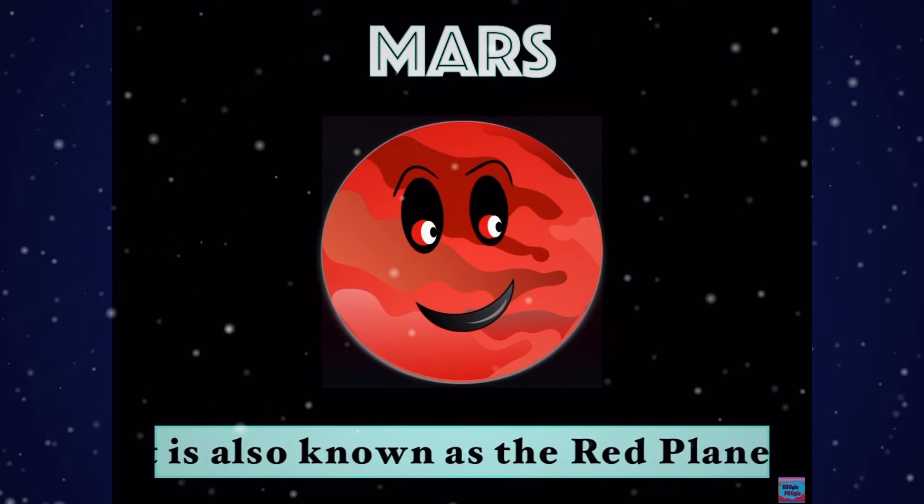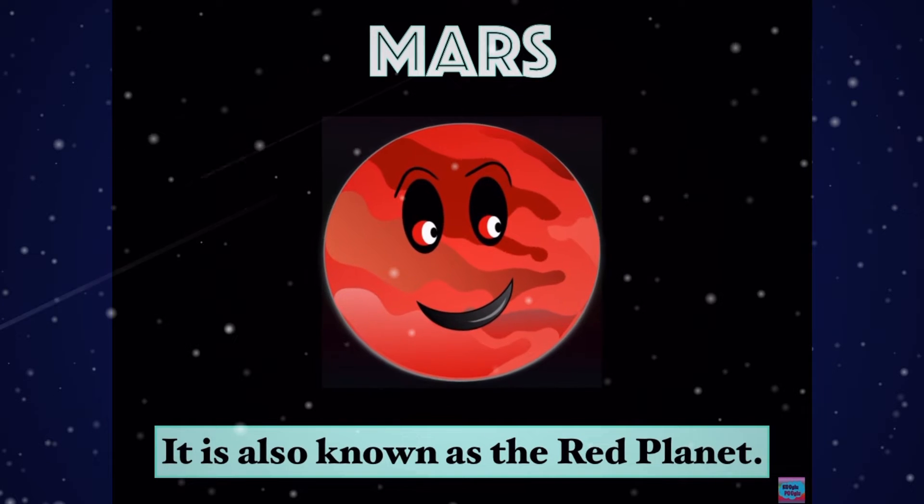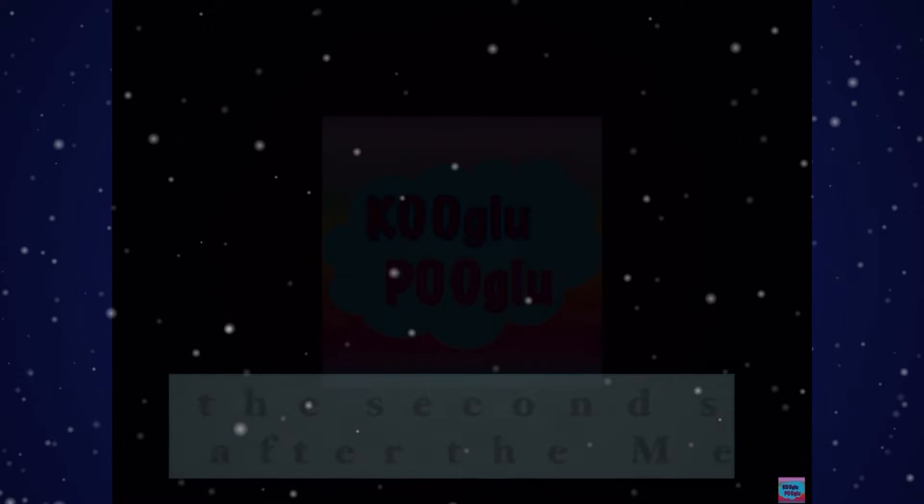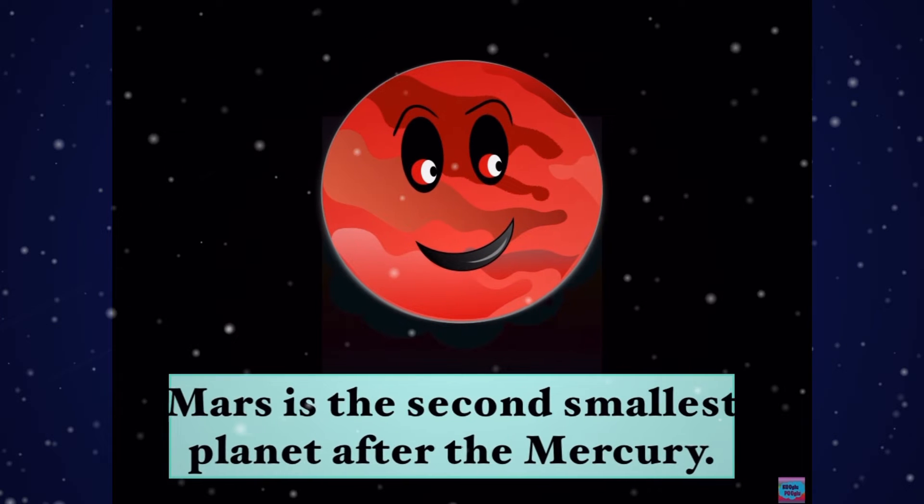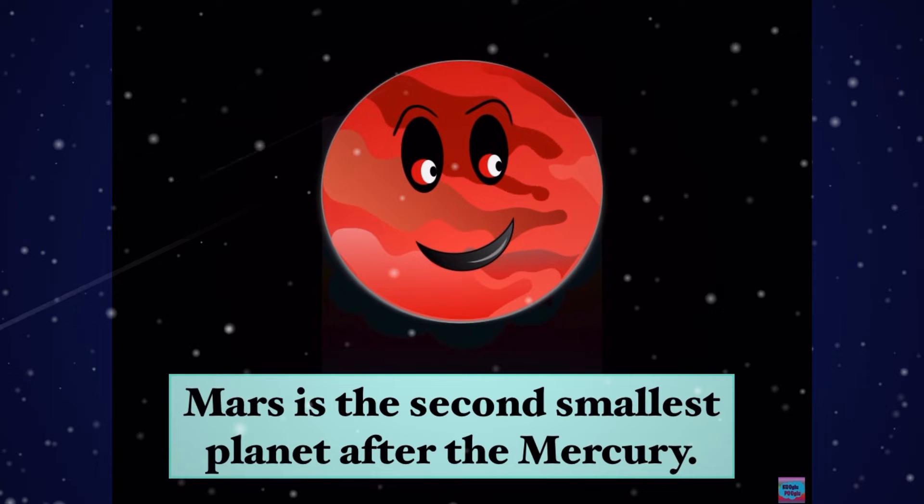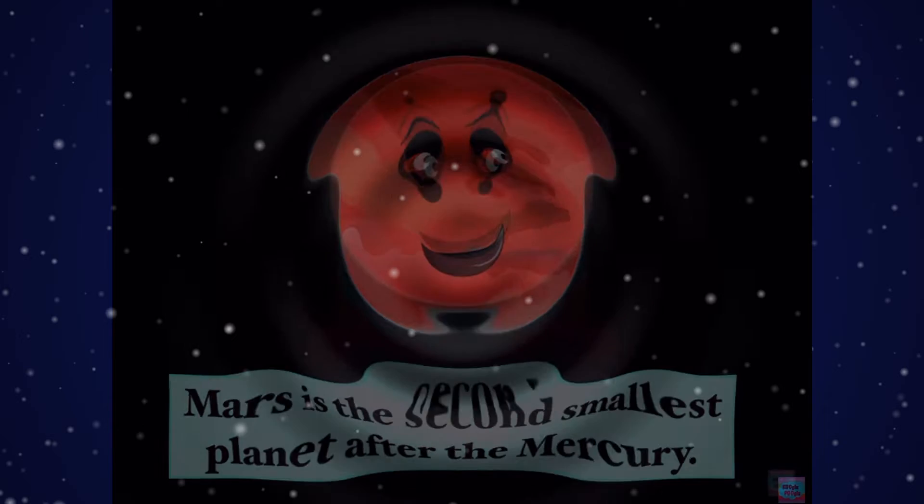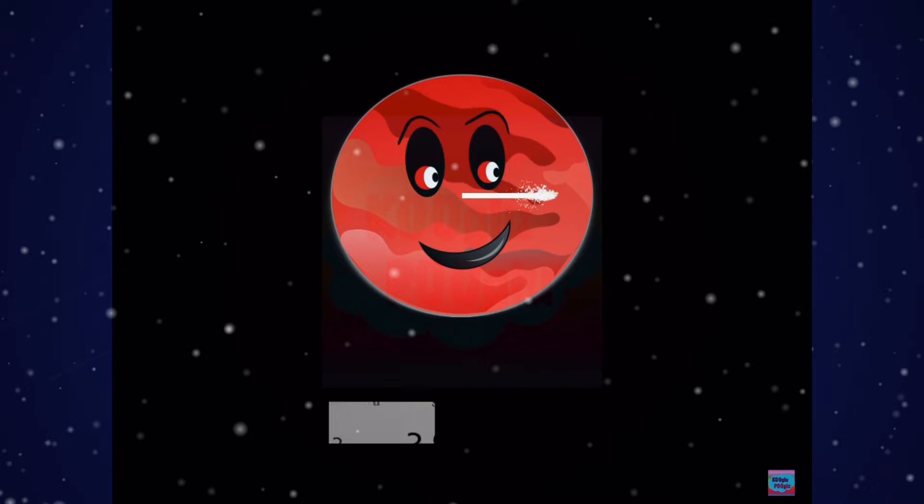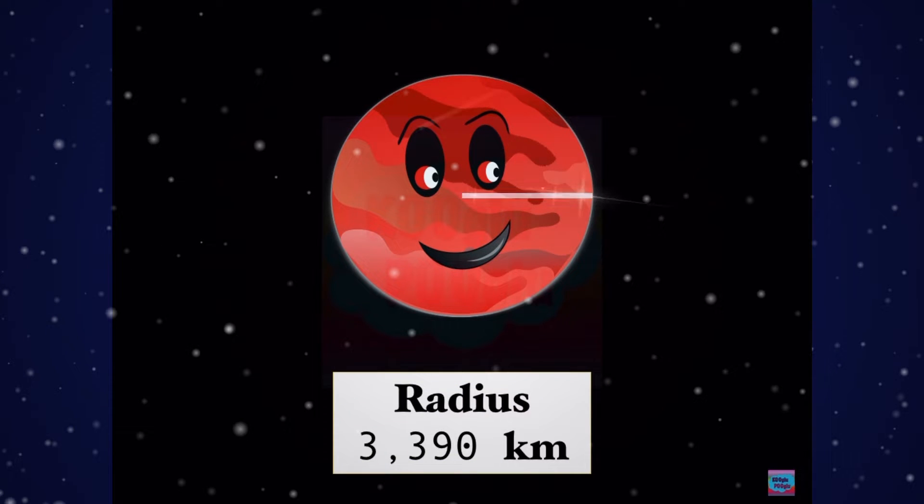Mars is also known as the red planet. Mars is the second smallest planet after Mercury. The diameter of Mars is around 6,779 kilometers and the radius is around 3,390 kilometers.